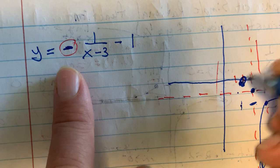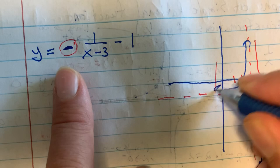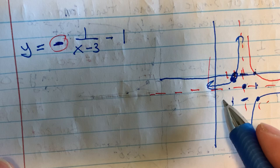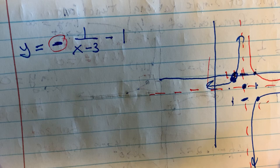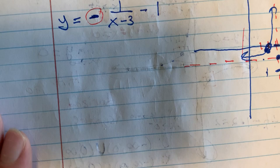That's what the graph should look like. The domain is all x values from negative infinity to 3, union 3 to infinity. If you have questions about domain, range, or other features, you can ask next class.